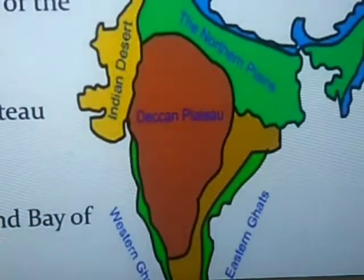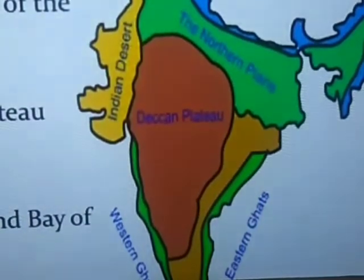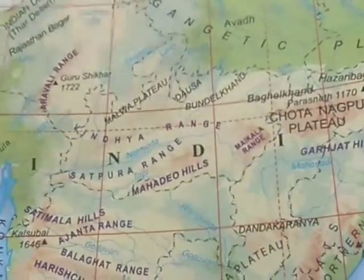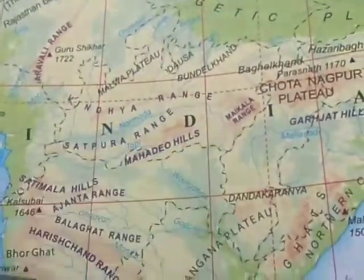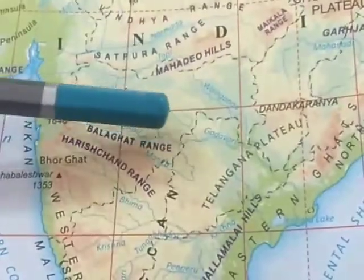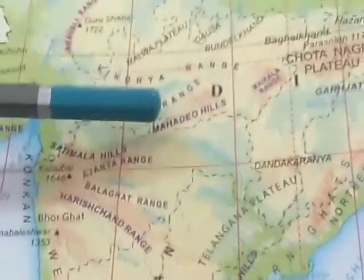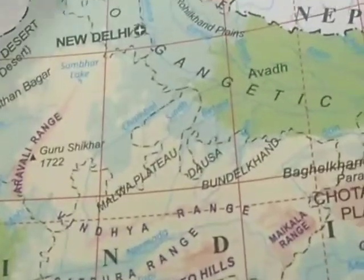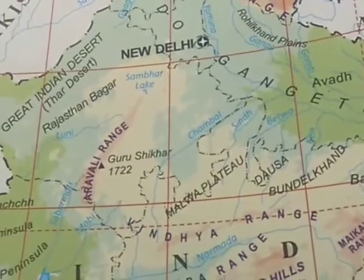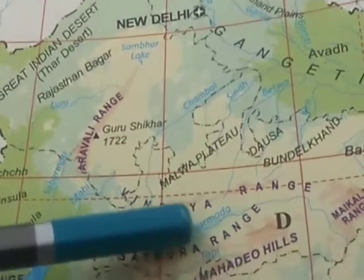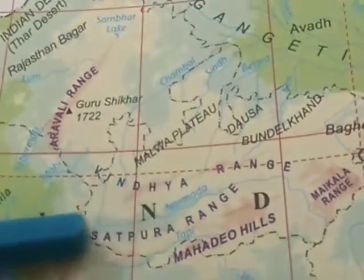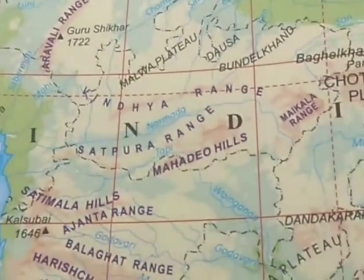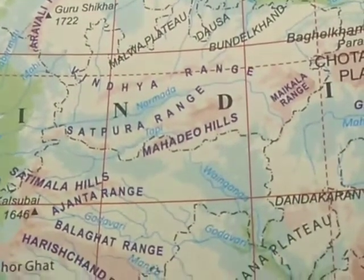The Peninsular Plateau has distinct parts: the Malwa Plateau in the north and the Deccan Plateau in the south. The Malwa Plateau is bounded by the Aravalli Hills in the northwest. We have the Vindhya Range marking its southern boundary. To the south, the Vindhya Range links to the Deccan Plateau.